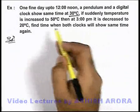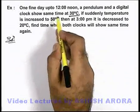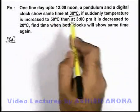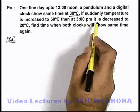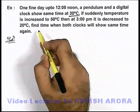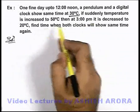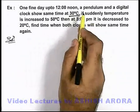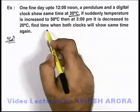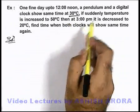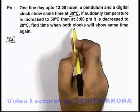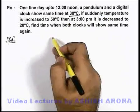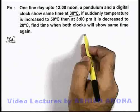When the total time lost by the clock is equal to the total time gained by the clock, then we can state that the pendulum clock will also show the correct time and it will be in sync with the digital clock — so both clocks will show the same time again.